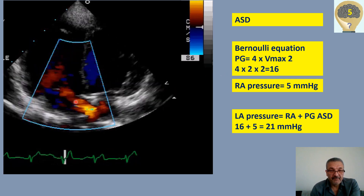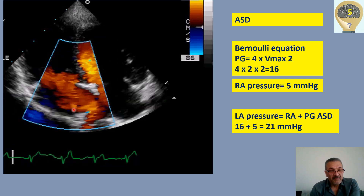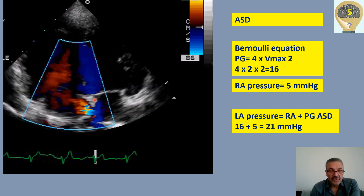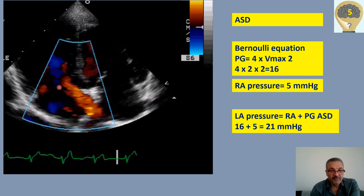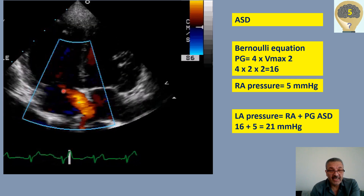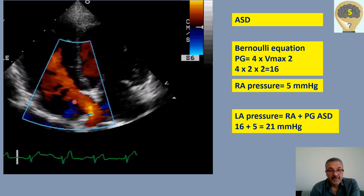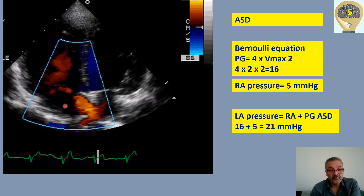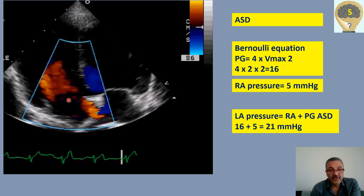The 16 mmHg is the pressure gradient of this jet. The left atrium has a pressure and the right atrium has a pressure that resists blood flow to that side. So left atrial pressure is a combination of this pressure gradient plus the right atrial pressure — that is what resists blood going from left to right. We therefore need to measure right atrial pressure to calculate left atrial pressure.